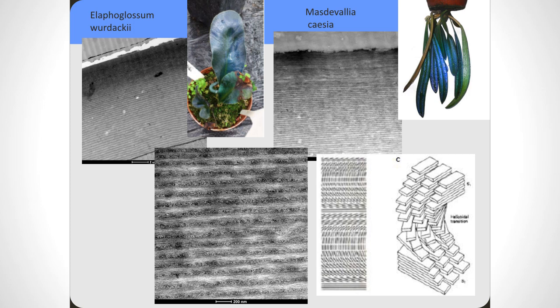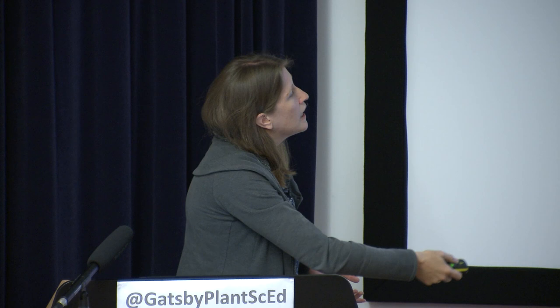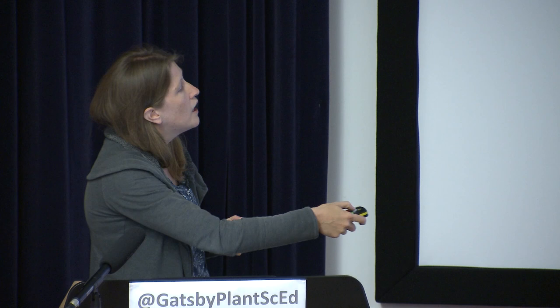Some plants take this multi-layer structure a bit further. Two rather beautiful ferns also produce iridescence in their structural cell wall, and they use a helicoidal structure. Helicoidal structures in plant cell walls are quite common — you find them particularly in twisting plants like bindweed — because they're good for strength and coiling. If you think about a helicoidal structure, it's like if you had a pack of cards and you twisted it. That is what is happening in the cellulose microfibrils of the plant cell wall: a helicoidal structure forms and its order causes structural colour to be reflected.